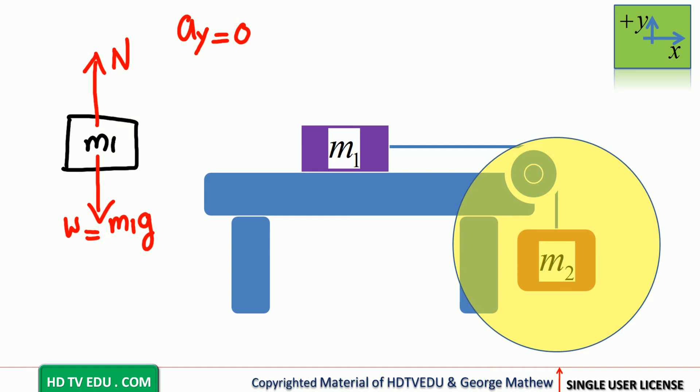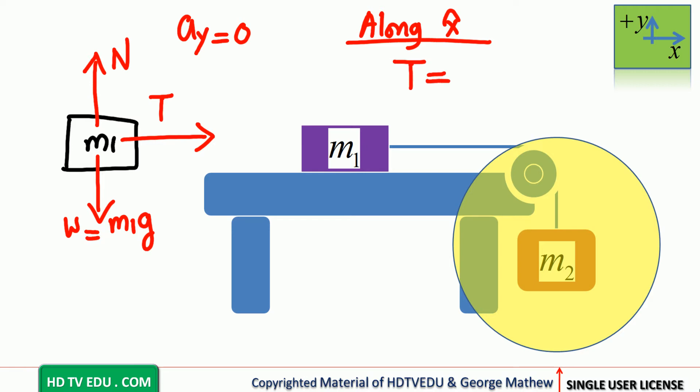What is the direction of pull? If it is to the left, it would be a pushing force, so that means it must be to the right. We have a tension force to the right. Tension is the only force along the horizontal, so net force equals mass times acceleration: T equals M1 times its acceleration. Do not forget, mass is M1, not M1 plus M2.